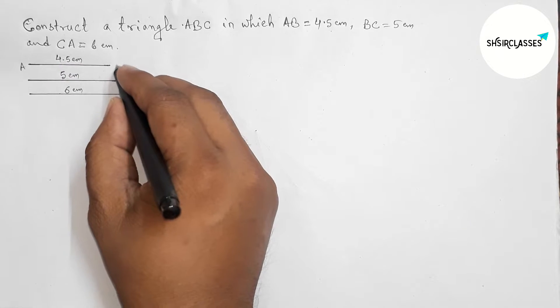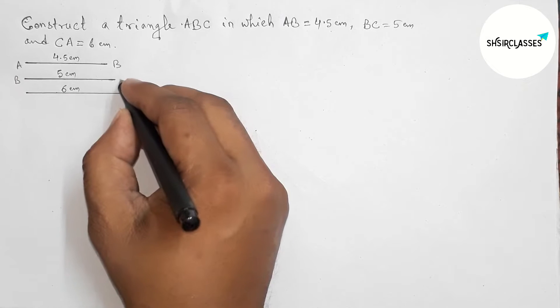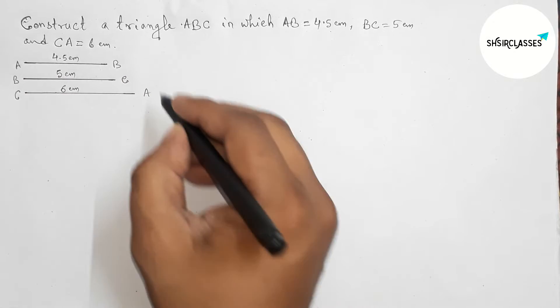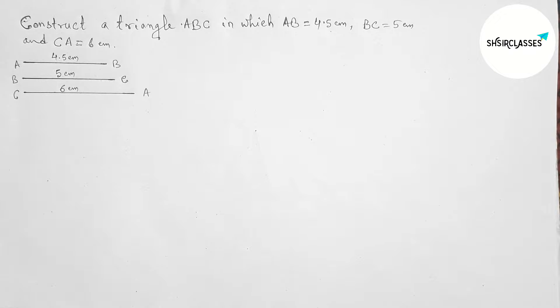So now labeling all the sides. This is AB, this one is BC, and this one is CA line segment.